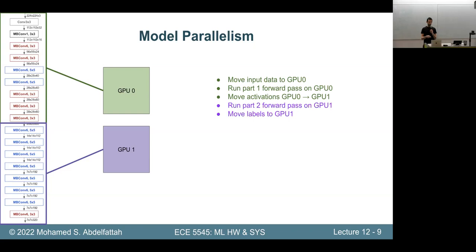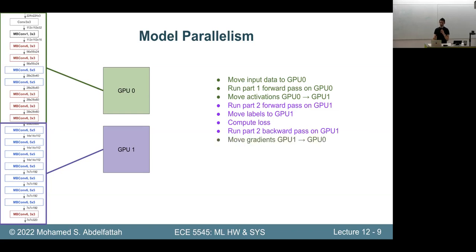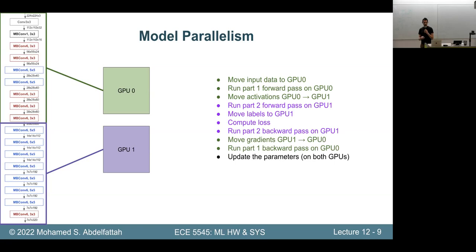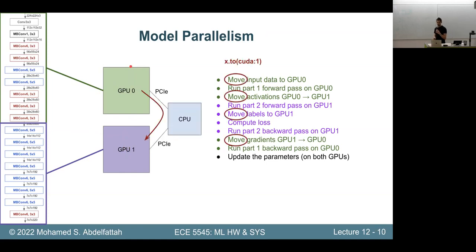Then I'll move the labels to GPU 1 to compute the loss, start backpropagation on GPU 1, and move the gradients from GPU 1 back to GPU 0 to compute the rest of the gradients. Finally I can update the parameters. Every time I say 'move something from one GPU to the other,' something is actually happening — they don't share the same memory space, they're on different chips.